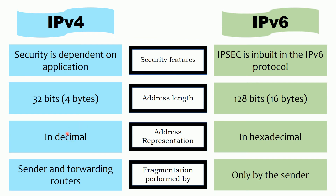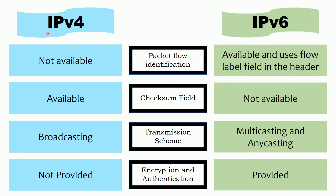IPv4 performs fragmentation at both the sending and forwarding routers, while in IPv6 it is only performed by the sender. No mechanism is provided in IPv4 to identify packet flow; conversely, IPv6 provides a mechanism for packet flow identification. The checksum field is available in IPv4 but not in IPv6. IPv4 uses broadcasting, while IPv6 uses multicasting and anycasting. Multicasting enables efficient network operations and prevents most problems related to broadcast storms in IPv4. Finally, IPv4 doesn't provide encryption and authentication, whereas IPv6 provides both encryption and authentication.